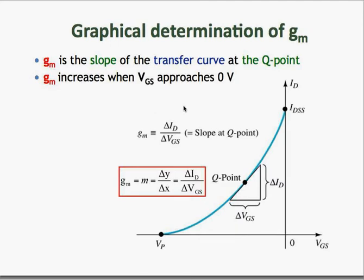Let us first look at the graphical method of determining GM. Looking at the transfer curve of a JFET or D-MOSFET, the transconductance factor is simply the slope of the transfer curve at the Q-point. If your Q-point is at a given location, GM is just the slope at that Q-point — you take a small change of ID and divide it by a small change of VGS.